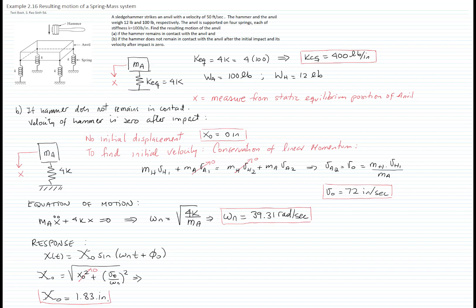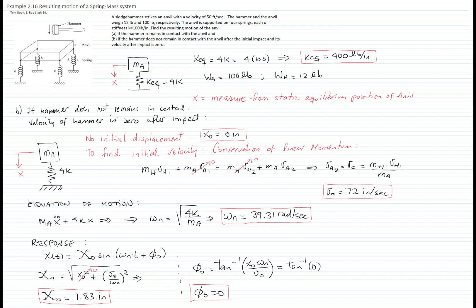The phase angle is calculated as the inverse tangent of initial displacement times natural frequency over initial velocity. Since the initial displacement is zero, we get the inverse tangent of zero, which is zero radians or zero degrees. Those are the two values needed for our complete response description. Please compare these values to the previous example where we had an initial velocity due to the hammer.